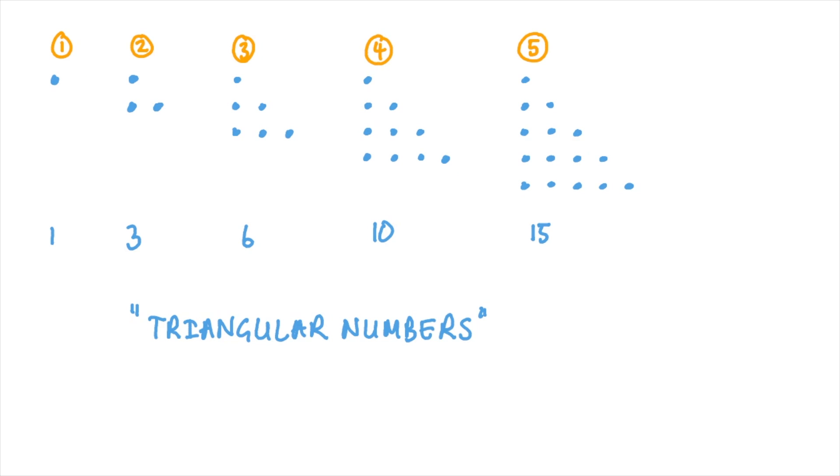Now when we visualize the problem in that way and we think about when n is 1 or 2 or 3 and so on, we get a series of patterns, and the sums that we get when n is 1 and 2 and 3 and so on are called the triangular numbers. And Gauss also went on to work on the mathematics of these.